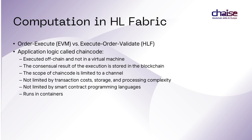HL Fabric applies a different transaction and smart contract execution lifecycle called execute-order-validate. The smart contract code in one of the nodes first executes a transaction. Next, the consensus algorithm orders the transactions. Before committing a transaction to the ledger, the results of smart contract execution are validated against the endorsement policy. The endorsement policy defines the validating nodes and conditions for endorsement, e.g., validated by 3 of 5 validators, ensuring determinism in transaction execution. The key benefits are vast network performance improvements and general-purpose programming languages for chain code programming.